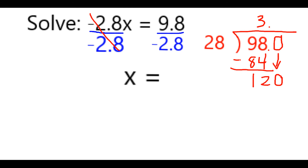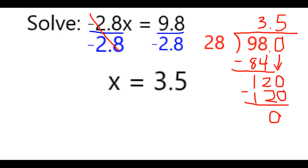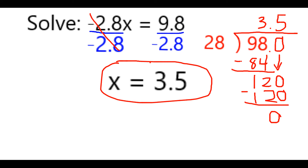Now I want to see how many times 28 goes into 120, and that does actually work out pretty nicely — that's just going to be an even 5 times. Therefore, x in this case is going to be an even 3.5, as we can see right here.